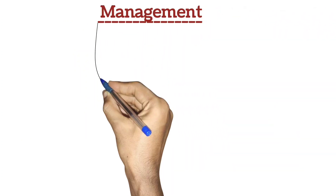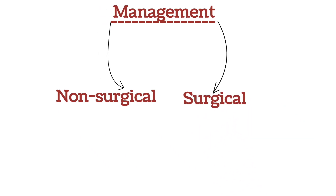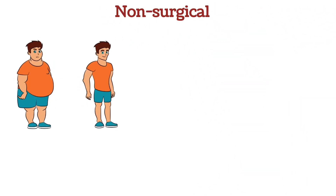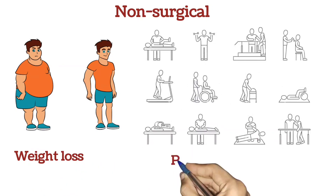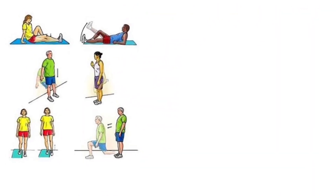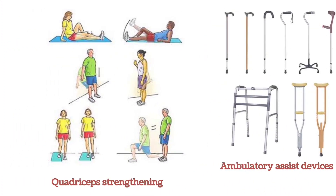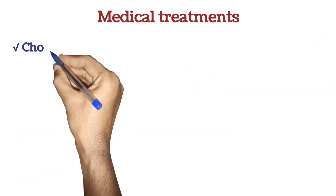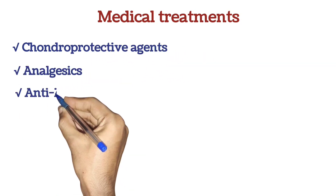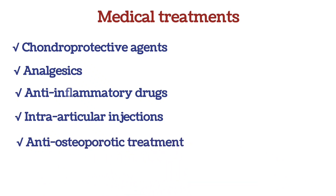Management: The management of knee OA focuses on both non-surgical and surgical approaches. Non-surgical interventions include weight loss, exercise programs, physiotherapy, quadriceps strengthening, low-impact activities, ambulatory assist devices such as canes, walkers, and insoles, and medical treatments such as chondroprotective agents, analgesics, anti-inflammatory drugs, intra-articular injections, and anti-osteoporotic treatment.